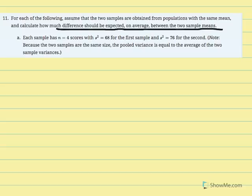Part A: each sample has equal size of 4, with variance of 68 for the first sample and variance of 76 for the second sample. Since they gave us variance instead of sum of squared deviations, I'm going to use the alternate pooled variance equation. Ultimately, this question is asking for the estimated standard error of the mean difference, and to calculate that we need pooled variance.